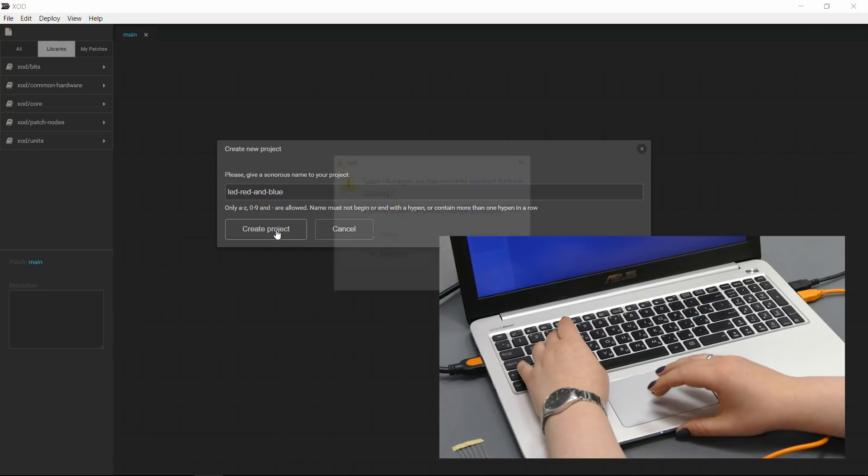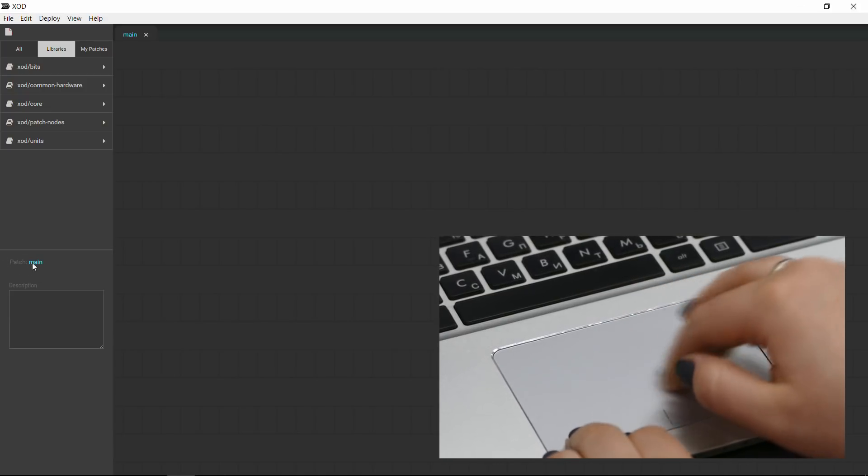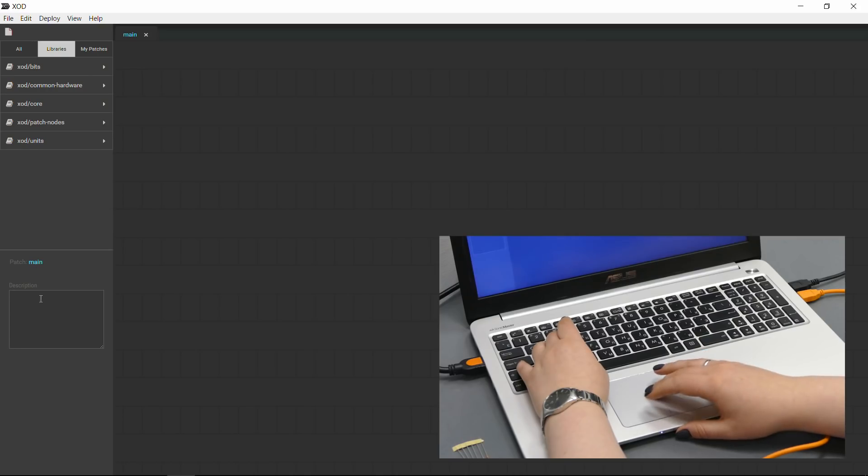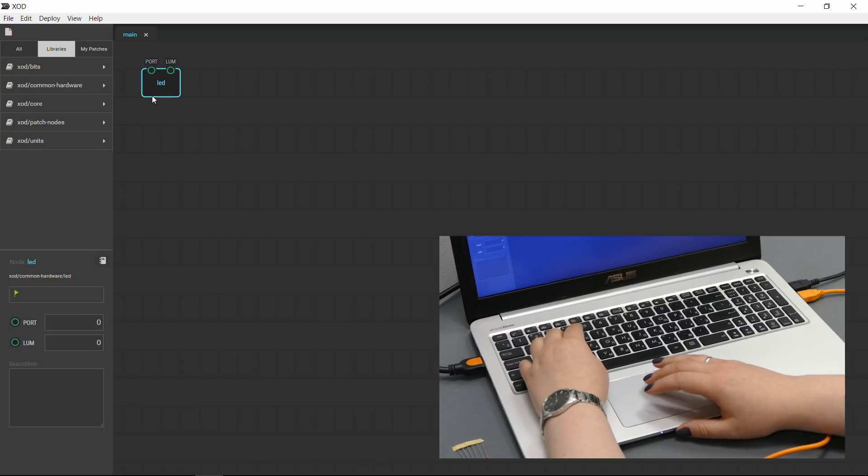And then what we'll do is we'll click anywhere inside of this patch. Patches are similar to sketches for Arduino, but in the ZOED language, it's called a patch. We'll click anywhere inside of this patch and hit the letter I, just type in LED, hit enter. That brings in our LED node,